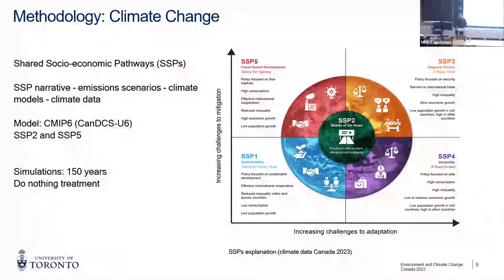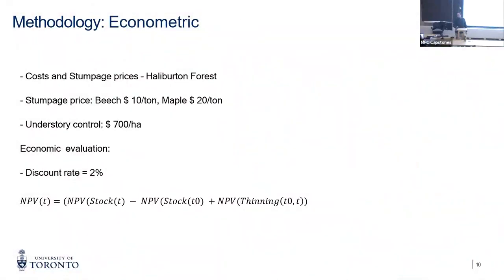For the economic methodology, the NPV is calculated as the NPV of stock at time t minus NPV of stock at time zero — so we are considering 2024 as the inventory start — plus the NPV of thinning between time zero and time t, so whatever thinning happens during that period is included. We are considering a discount rate of 2%, $700 per hectare for understory control, beech at $10 per tonne, and maple at $20 per tonne.